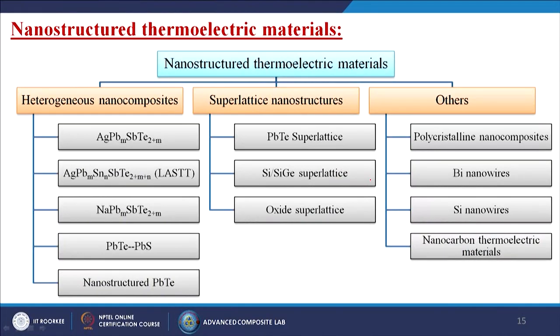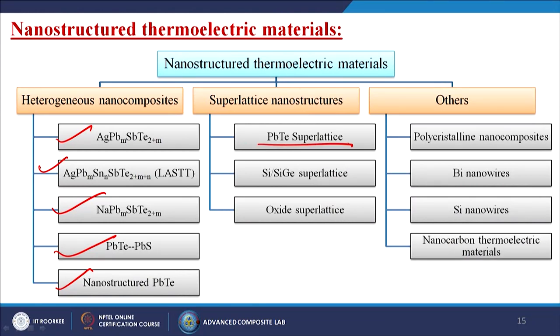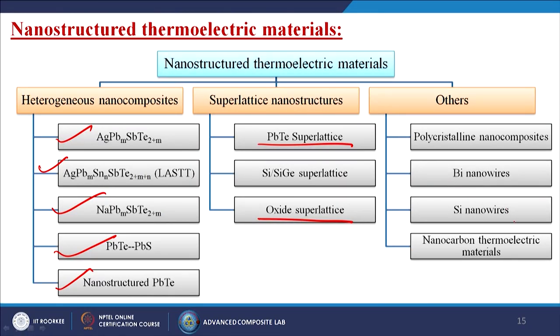Next, nanostructured thermoelectric materials. When we make materials in the nanometer range — heterogeneous nanocomposites — we combine many materials together to get more efficiency. Nanostructured lead telluride, or lead telluride–lead sulfide combinations, are used. For superlattice nanostructures, lead telluride superlattice or oxide superlattice materials are used. Other types include polycrystalline nanocomposites, bismuth nanowire, and silicon nanowire, which people are working on for thermoelectric nanogenerators.